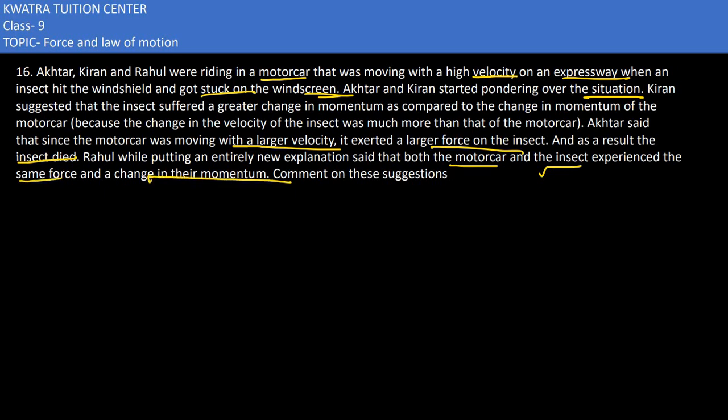We need to determine which explanation is correct. Kiran's suggestion is not correct. Why? Because momentum is always conserved. She is saying a greater change in momentum is observed for the insect, but according to the law of conservation of momentum, the change in momentum of the insect would be equal to the change in momentum of the motor car.